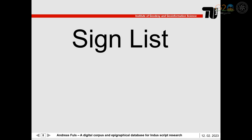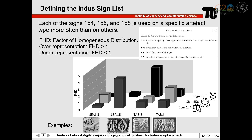Let me focus now on the task of how to define the sign list, which is not an easy task. We must distinguish between distinct signs that behave differently and graphic variants of the same sign with identical meaning and sign function. This task is difficult, since graphically similar signs may behave very differently. For example, signs 154, 156, and 158 look similar but are used on specific artifact types.